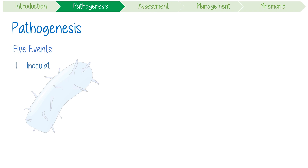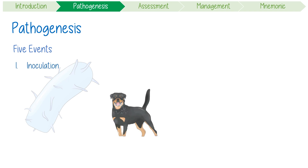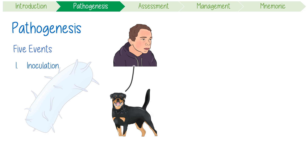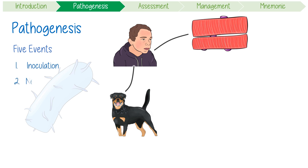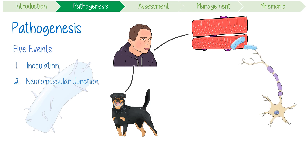First, inoculation — a patient is bitten and inoculated with the virus, with an incubation period of about 50 days. Second, the virus, now in the muscle, makes its way to the neuromuscular junction, where it binds to the nicotinic acetylcholine receptors.